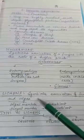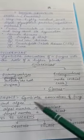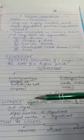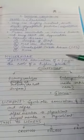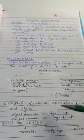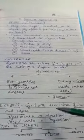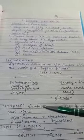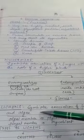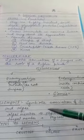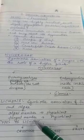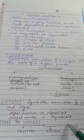Now lichens — lichens are the symbiotic association of fungi and algae. Don't get confused between mycorrhiza and lichens: in mycorrhiza the fungus is associated with the roots of higher plants. In lichens, the algal member is called the phycobiont and the fungal member is called the mycobiont.